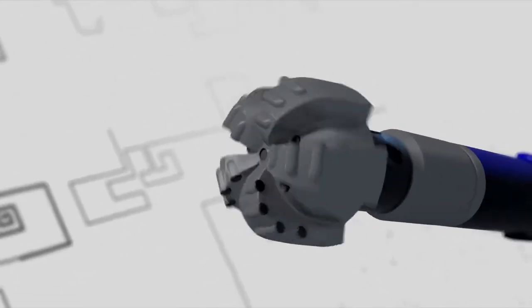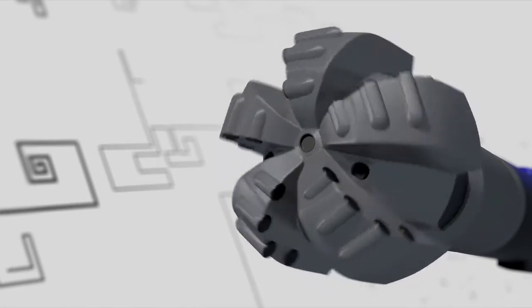The second type of drill bit is the fixed cutter bit. Unlike the roller cone, fixed cutter types do not have moving parts.